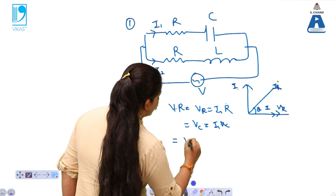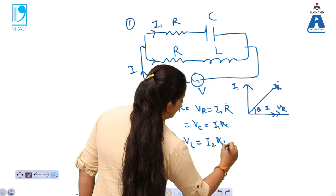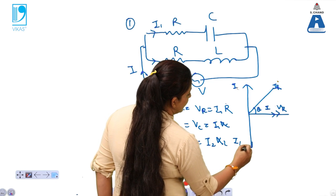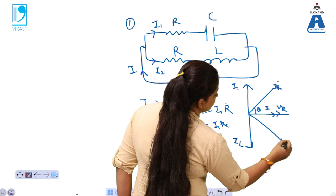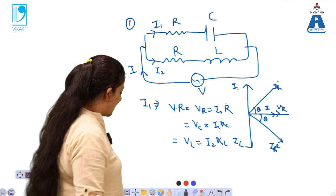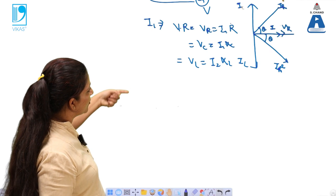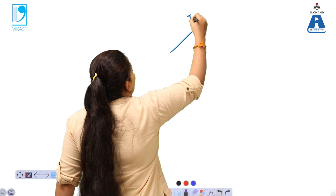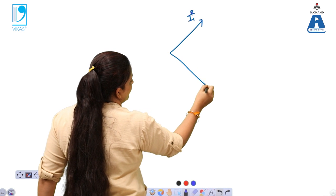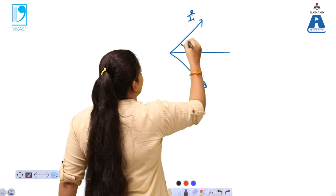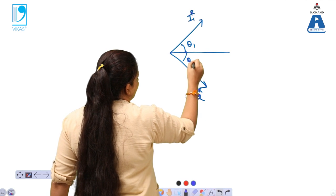For the I2 branch phasor, VL = I2 × XL, and the inductive current IL lags behind the voltage. The resultant of these two gives IR2, which makes an angle theta2. So at the end we have two resultant components: IR1 making angle theta1 and IR2 making angle theta2.